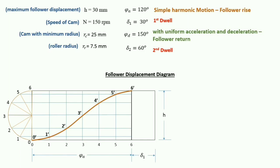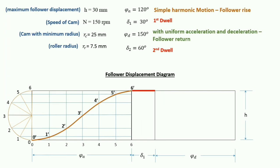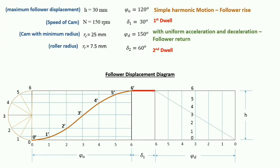Next is delta 1, the dwell of 30 degrees, followed by the uniform acceleration and deceleration period for follower return. We create a rectangle box for phi D = 150 degrees using the same scale. We divide phi D into 6 equal parts, draw all the vertical lines, and then divide the center line into 6 equal parts and draw a diagonal.